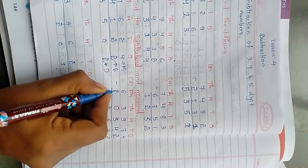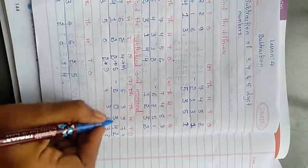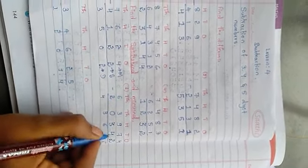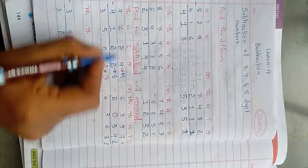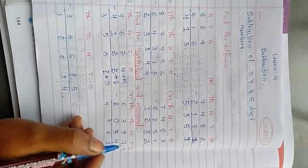So 4 plus 2 is 6. See, these are called subtrahend. The second, what you are done now, those are subtrahend.